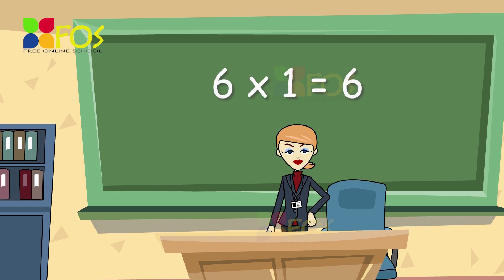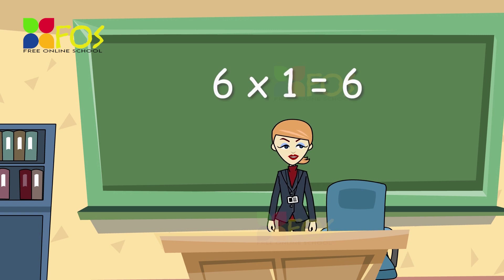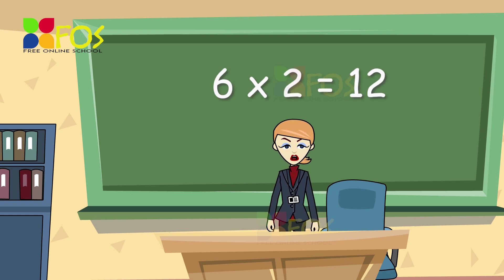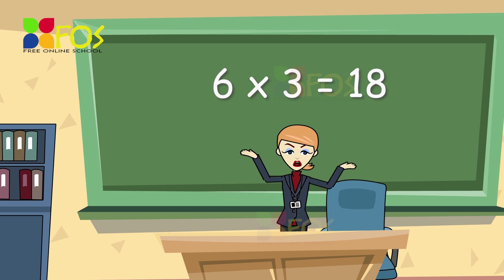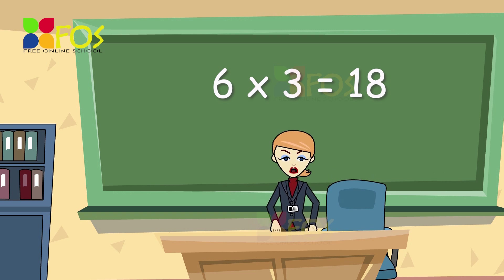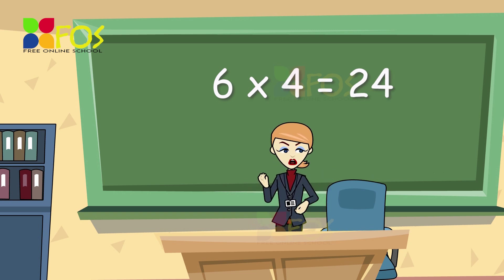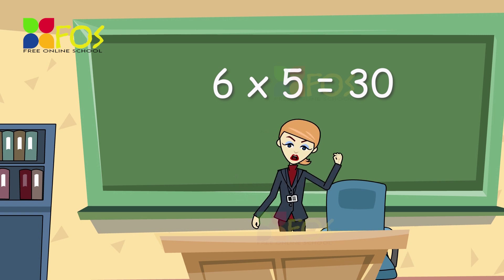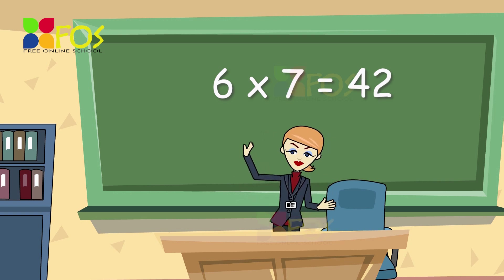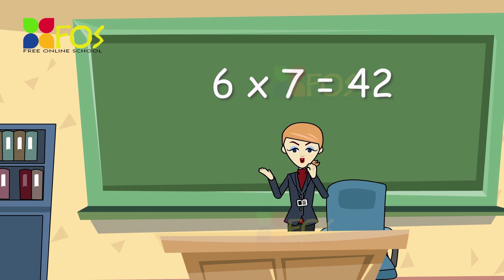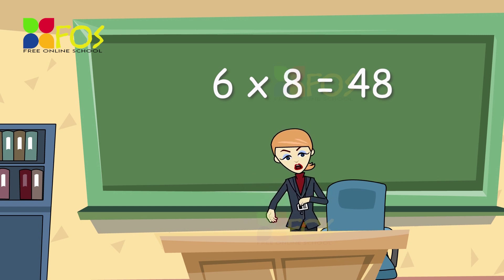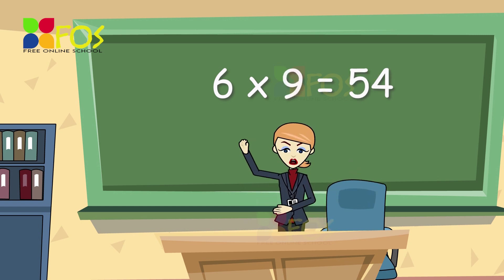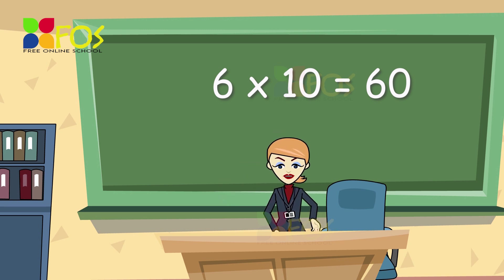6 1s are 6, 6 2s are 12, 6 3s are 18, 6 4s are 24, 6 5s are 30, 6 6s are 36, 6 7s are 42, 6 8s are 48, 6 9s are 54, 6 10s are 60.